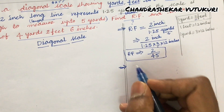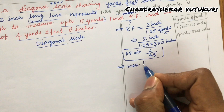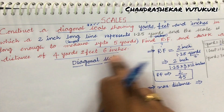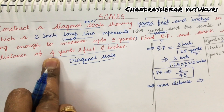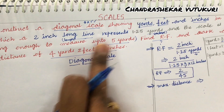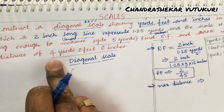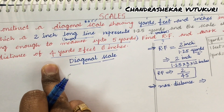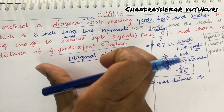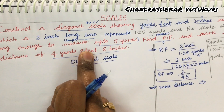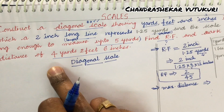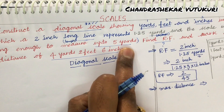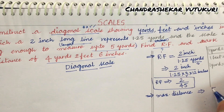Once the RF is worked out, the next step is to find the maximum distance for the scale. The maximum distance — long enough to measure — is given in the problem. Looking at the marking distance of 4 yards 2 feet and 6 inches, the nearest maximum value would be 5 yards. In this problem, it is mentioned clearly that the long-enough-to-measure distance is 5 yards.